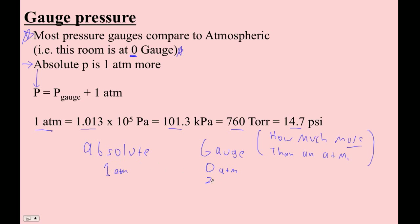If you have a gauge pressure of two atmospheres, the real pressure, the absolute pressure is three atmospheres. So that's pretty easy. If you're in atmospheres, it's pretty easy.